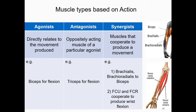Muscles that are agonists act in a way that corresponds most directly with the movement produced — the biceps is the agonist that moves the elbow into flexion. Muscles that are antagonists act in opposition to agonists — in elbow flexion, the triceps acts in opposition to the biceps. Muscles that are synergists cooperate to produce a motion — the brachialis and brachioradialis are synergists of the biceps in elbow flexion, and the flexor carpi ulnaris and flexor carpi radialis are synergists in wrist flexion.